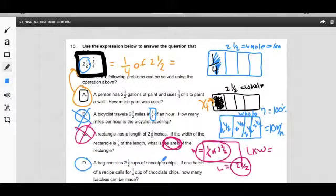A bag contains two and a half cups of chocolate chips. If one batch of a recipe calls for one fourth cups of chocolate chips, how many batches can you make?